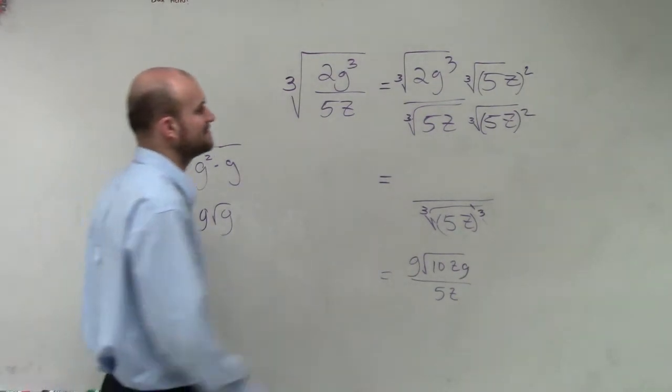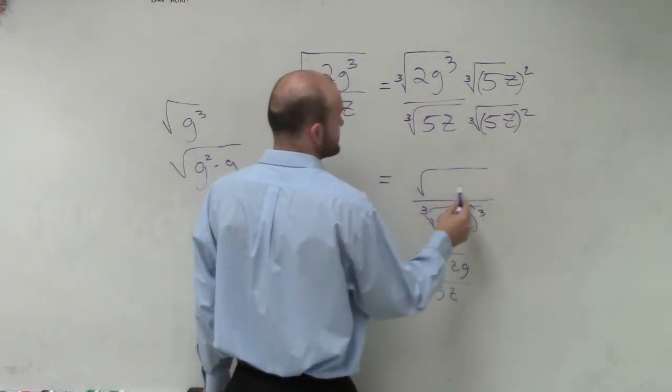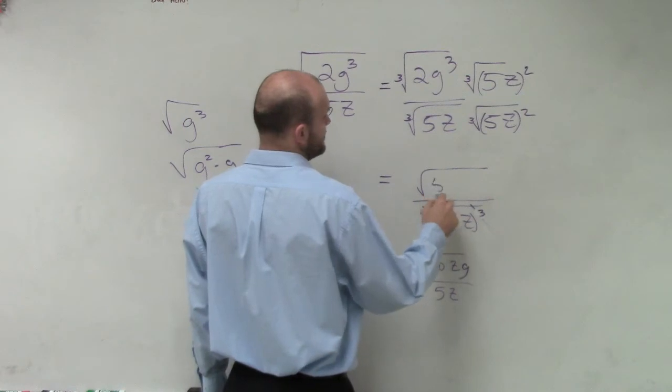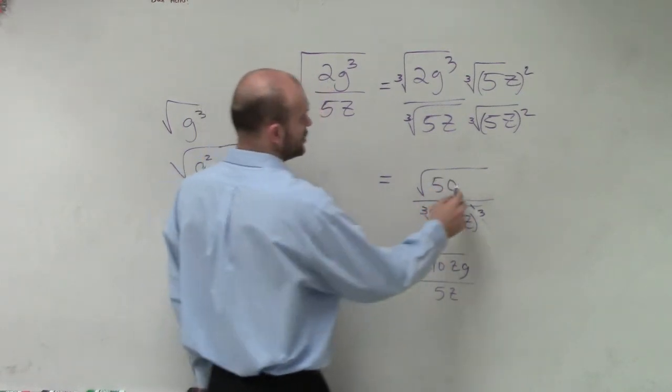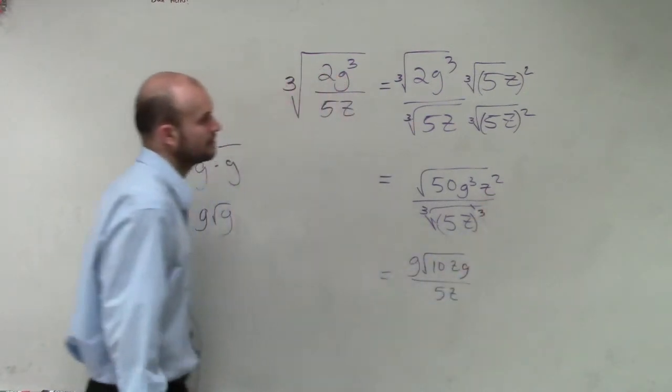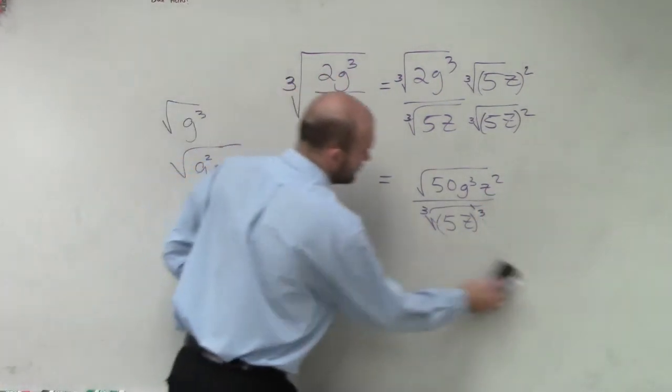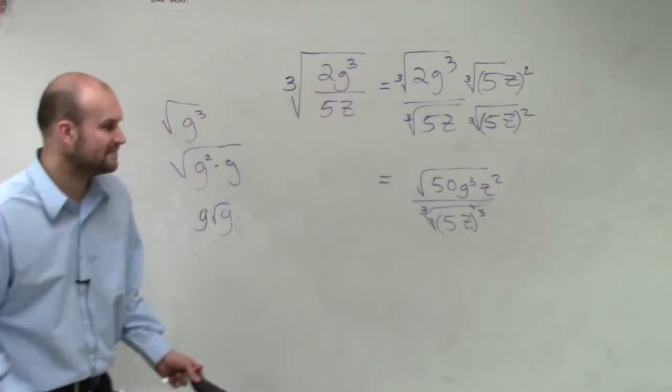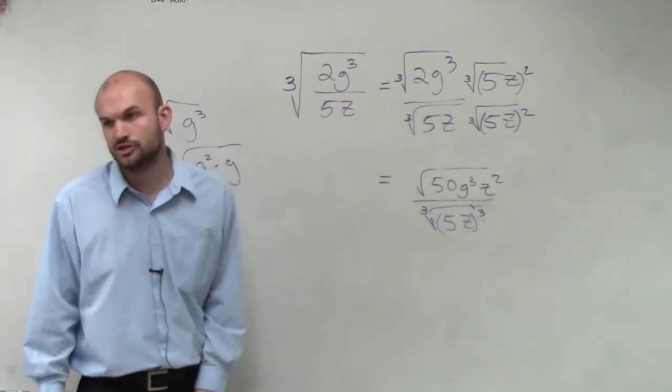5 squared is 25 times 2. So now we'd have the cube root of 50 g cubed z squared. And then we can't take the cube root of 50, but can we take the cube root of g cubed? Yeah.